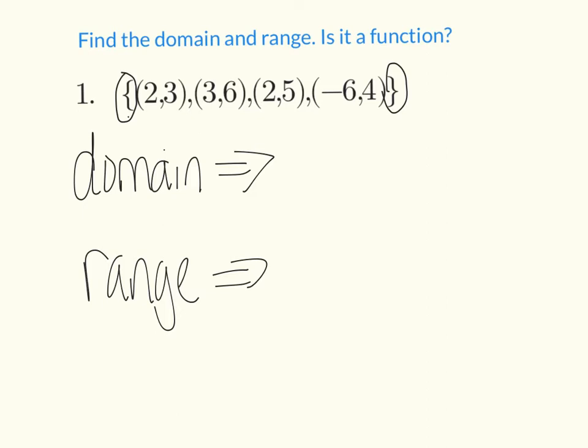So here we have, all my x values are going to be the domain. So I have a 2. I have a 3. Now I have a 2 again, I already have it, so do not write it again. Don't repeat. And then I have a negative 6. So then my domain is 2, 3, and negative 6.